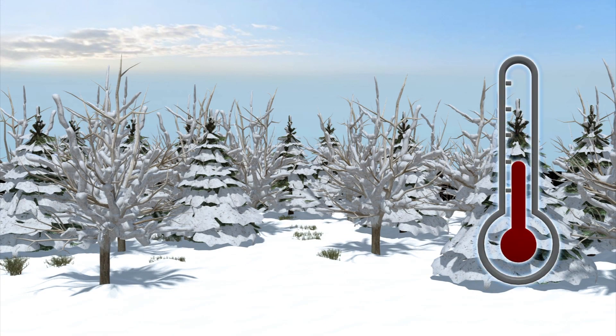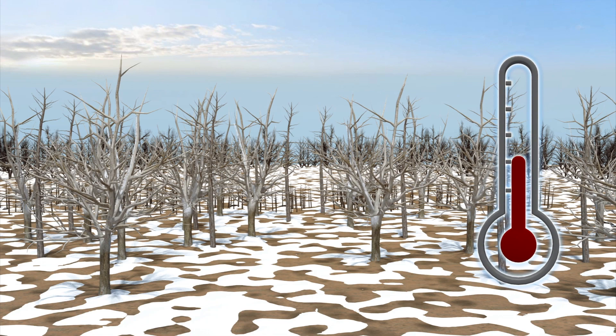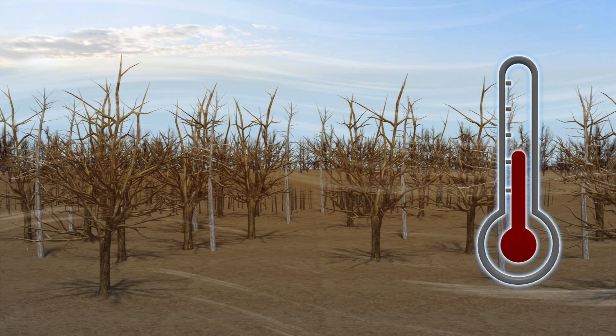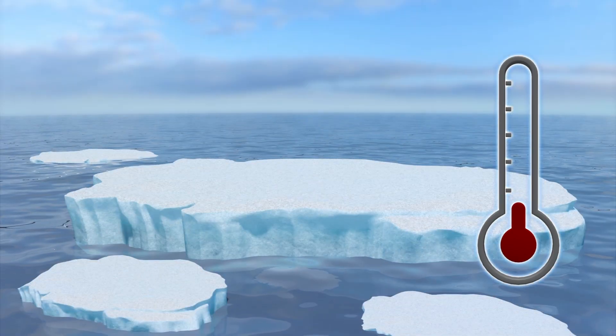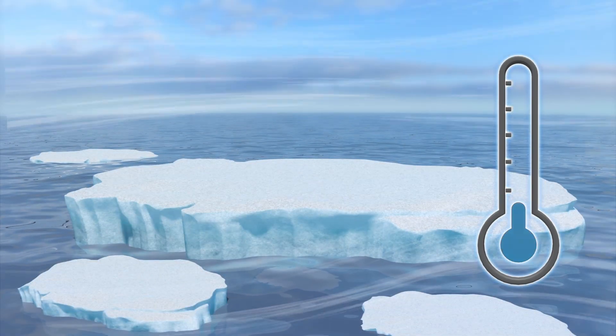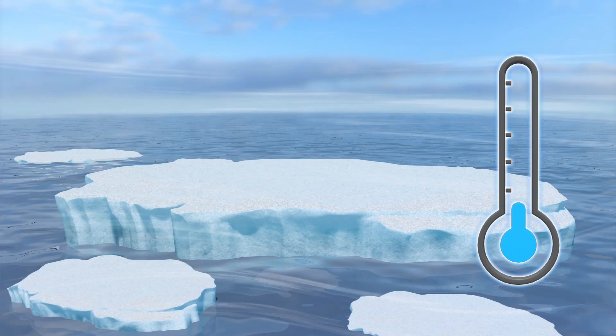The terms weather and climate are not interchangeable. Weather refers to daily variations in temperature, precipitation, wind, etc. And according to the NOAA, climate is the average weather conditions of an area over at least a 30-year period.